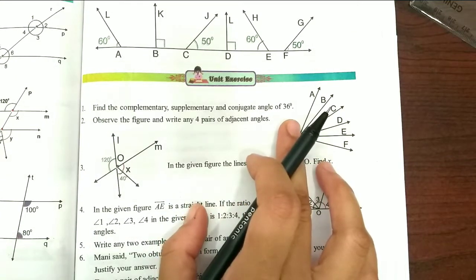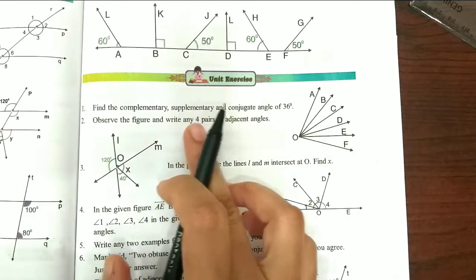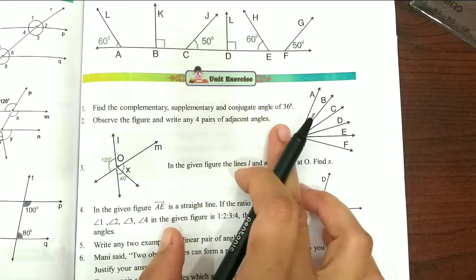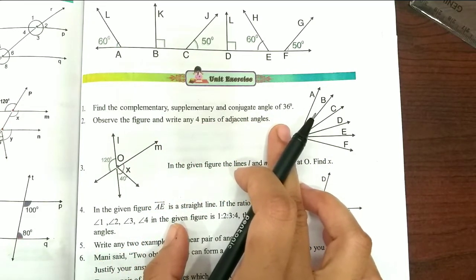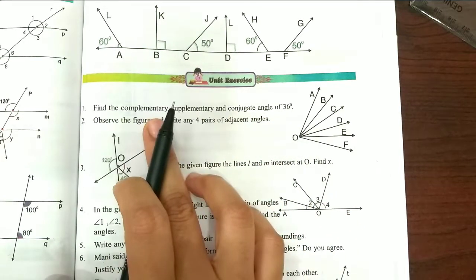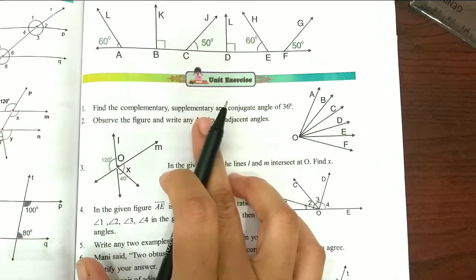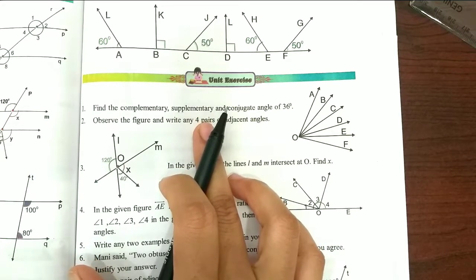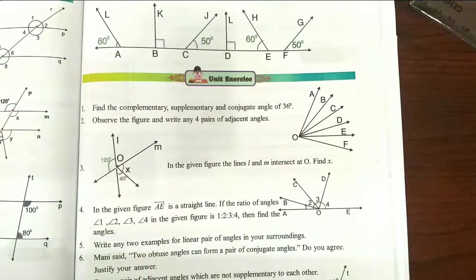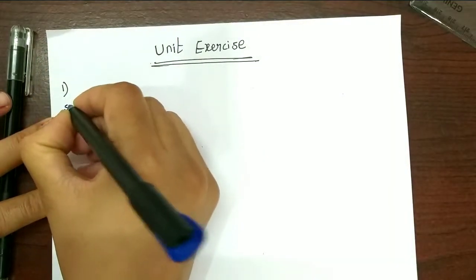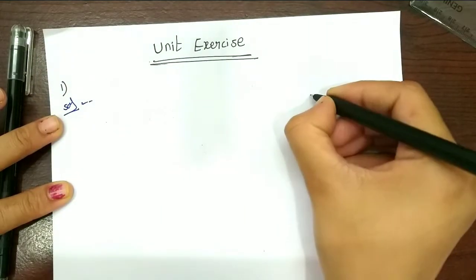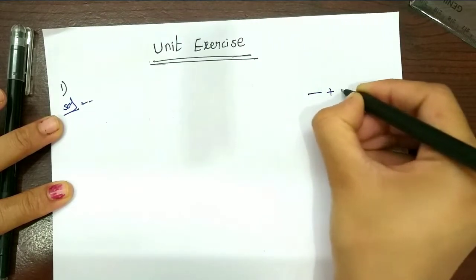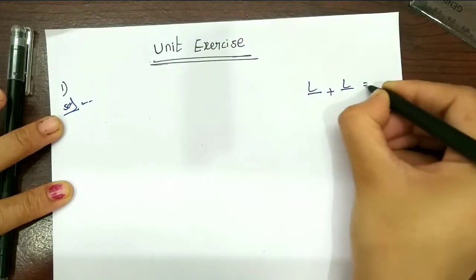For this 36 degrees, we will find the complementary, supplementary, and conjugate angles. We already have a video on definitions — links in the description. I will show you the solution. So, complementary angles: if you add two angles, it will be 90.